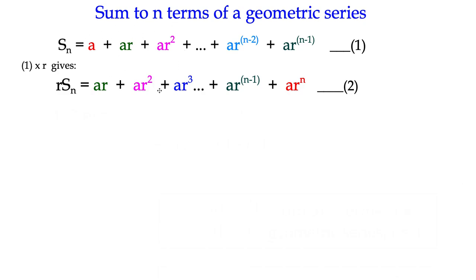If you notice the colours that I've added there, you notice that there is a matching term. It has to be a wee bit offset, but there is a matching term apart from the two red terms, a in the first equation and ar to the n in the second equation don't have a matching term. And we're going to subtract equation 2 from equation 1.